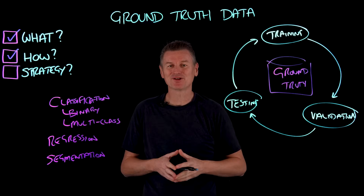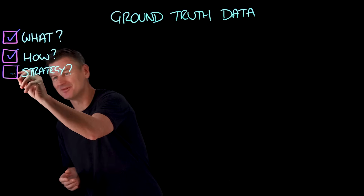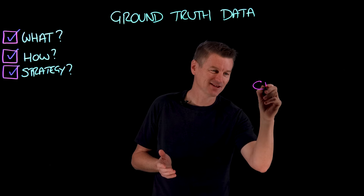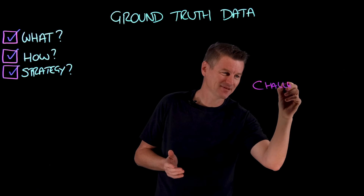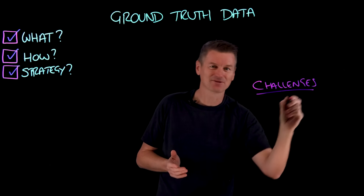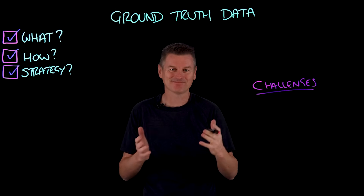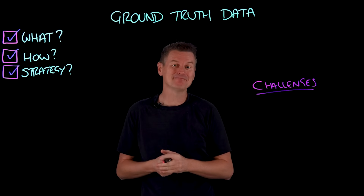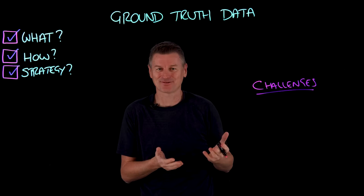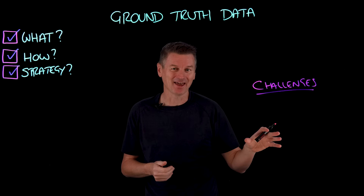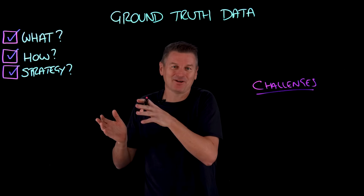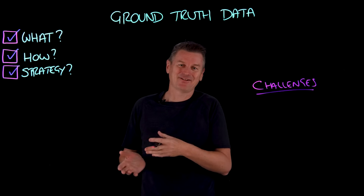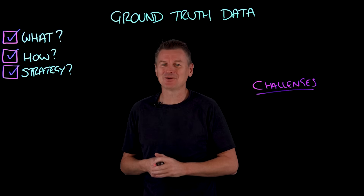Let's take a look at some common ground truth challenges and some strategies. What are some of the challenges with ground truth data? I've been emphasizing the need for ground truth data to be accurate. A model that misclassifies cats because of some errantly labeled dog paws is one thing, but a model used in an autonomous vehicle that was trained with ground truth data where red lights were misclassified as green lights — well, that would be quite another.